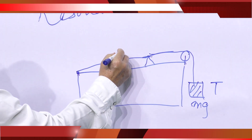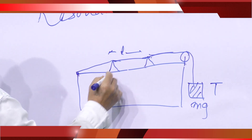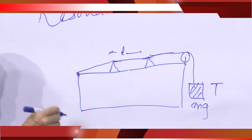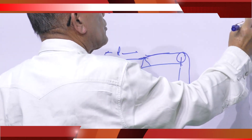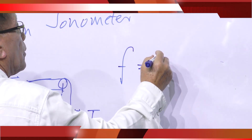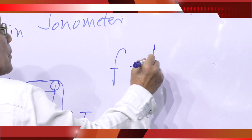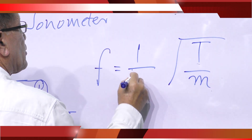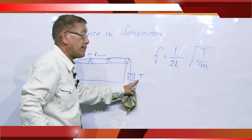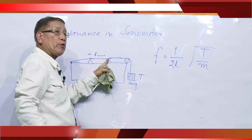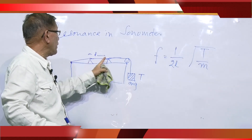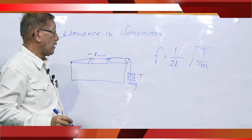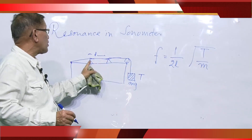Now, if L is the length between the bridges, we find that the frequency of this string between the two bridges is given by: F equals (1 / 2L) times the square root of (T / m), where T is the tension and small m is the mass per unit length of the wire — that is, the mass of the wire divided by its length.